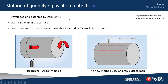We're now going to take a look at a new method of quantifying twist on a shaft. This was developed and patented by Daimler AG, and it uses a 3D map on the surface. Measurements can be taken with suitable Tallyrond or TallyServe instruments. In each case, it's important when doing this to make sure that the shaft being measured is very well aligned.